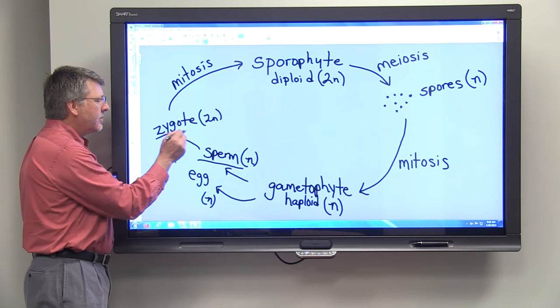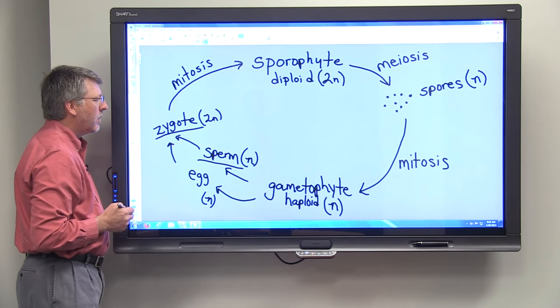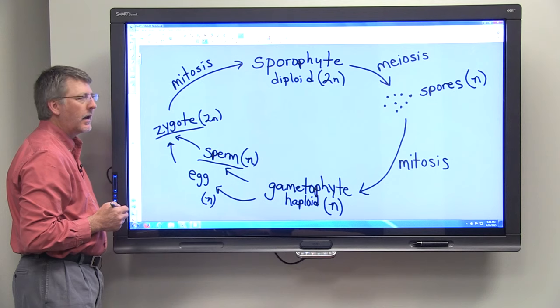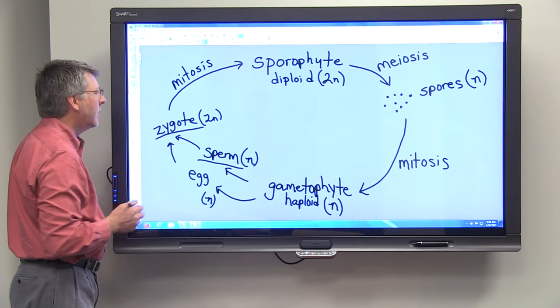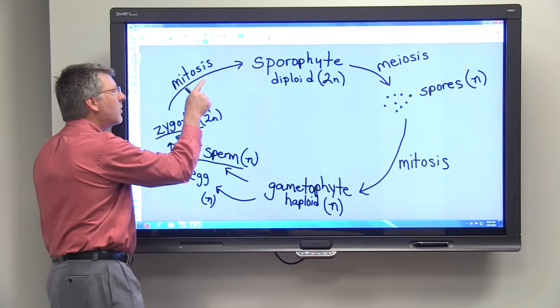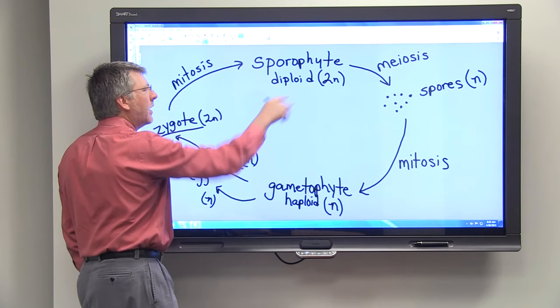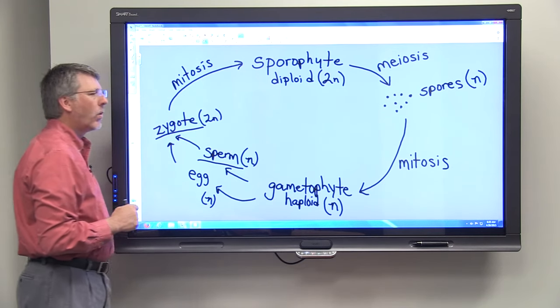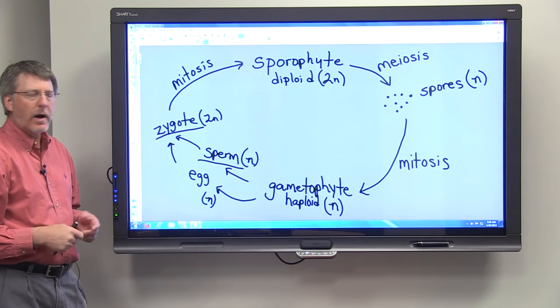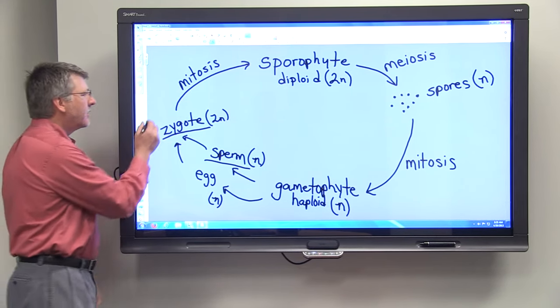During fertilization, the sperm will fertilize the egg and we get a diploid zygote. This diploid zygote will then divide by the process of mitosis and we get a sporophyte generation. So, this is why it's called alternation of generations.